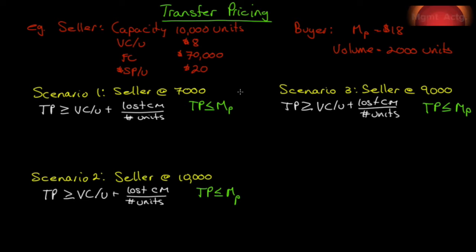We're going to consider a transfer price under three scenarios for this hypothetical example. The seller division has capacity to produce 10,000 units. Their variable cost per unit is $8, their total fixed costs are $70,000, and they're currently selling in the outside market at $20 per unit. The buyer is already buying in the marketplace at $18 per unit and is buying 2,000 units.